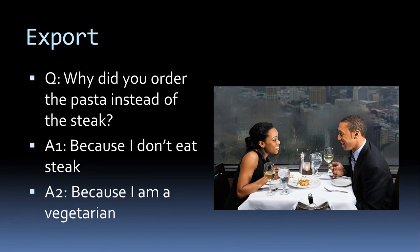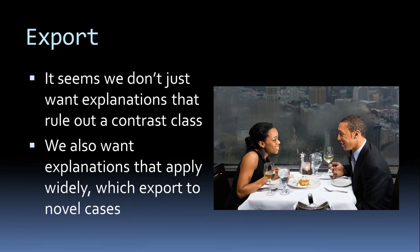Some people think ruling out contrast classes is pretty much all explanations do, but I think there's something more — a positive job: they export widely. Consider 'why did you order the pasta instead of the steak?' 'Because I don't eat steak' rules out the contrast class. But 'because I'm a vegetarian' is a better explanation — it also rules out the contrast class but gives you further information applicable to new cases: you could infer why they'd take risotto over chicken on a second date. Both rule out the contrast class equally, but one exports to new cases.